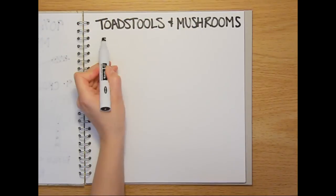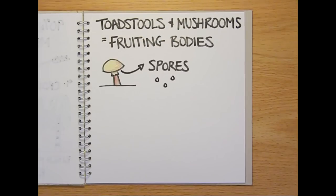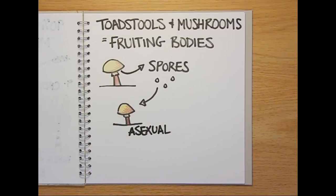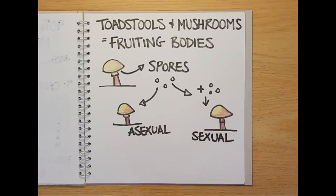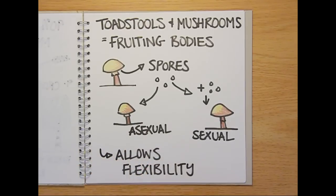So what are toadstools and mushrooms? These are the fungal fruiting bodies. They release spores that can either germinate on their own to form a new individual by asexual reproduction, or the spores can join together to form a new organism, thereby reproducing sexually. Having the flexibility to reproduce asexually or sexually is a great advantage that allows fungi to exploit stable conditions or adapt to changing ones.